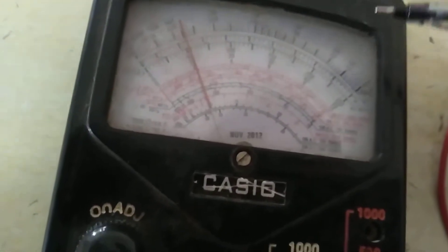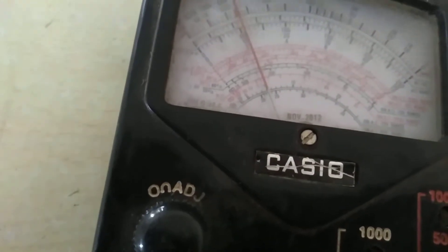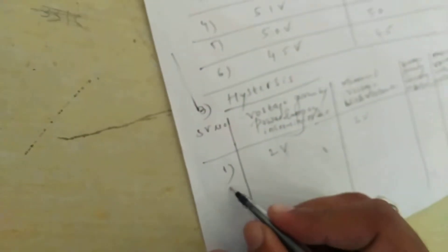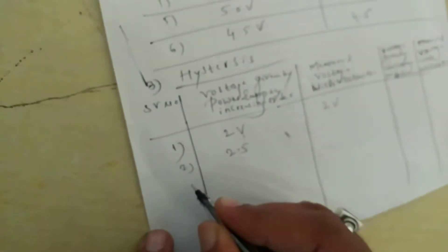The scale shows 0, 2, 4, 6, 8 and 10 — the reading is at 2. You can write it here: 2 volts. Then I will increase to 2.5 volts using the supply voltage.